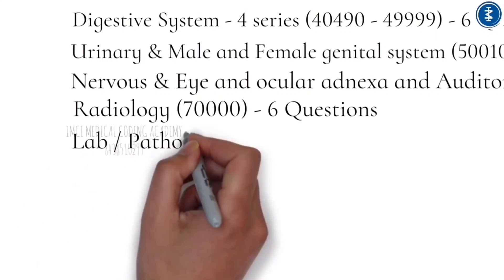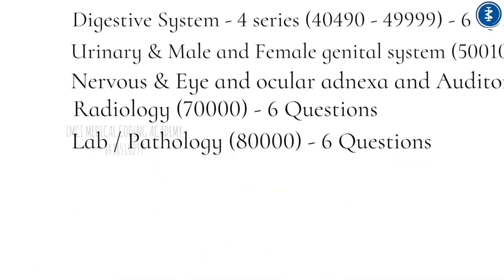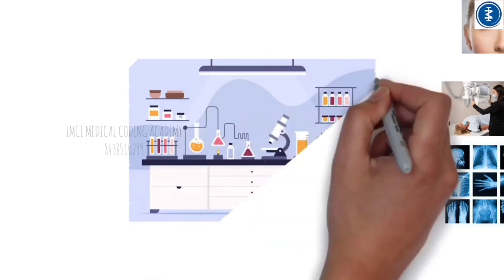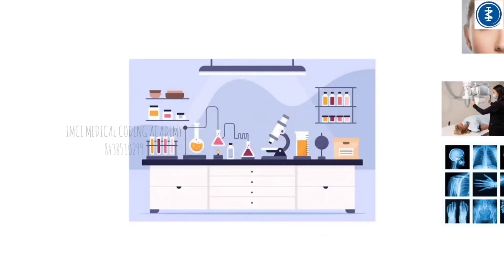The Pathology and Laboratory section (Series 8, codes 80047–89398) contributes 6 questions covering lab tests including panel codes, drug testing, pathology consultation, urinalysis, surgical pathology, reproductive medicine procedures, and infection identification tests.